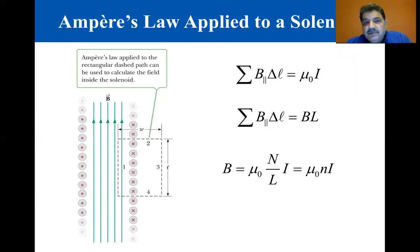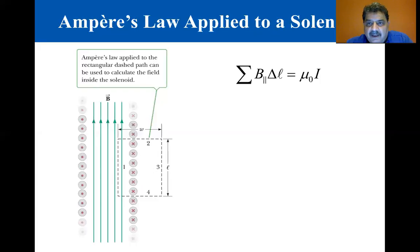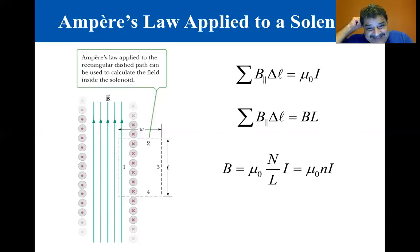The contribution along side three is clearly zero because B equals zero in this region. The contributions from sides two and four are both zero because B is perpendicular to delta L along these paths. Side one of length L gives a contribution of BL to the sum because B is uniform along this path and parallel to delta L. We can rewrite that as B equals mu zero N over L times I, or mu zero N I, where N is the number of turns per unit length.